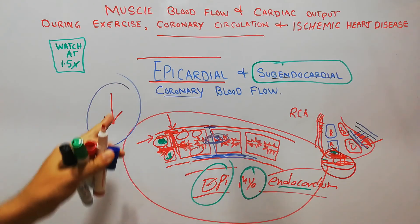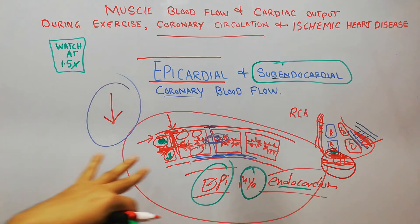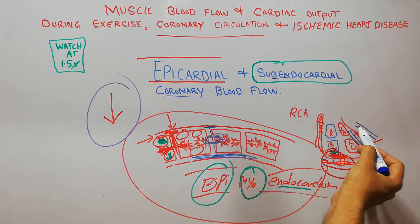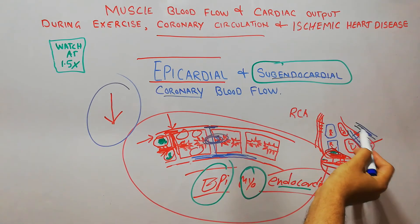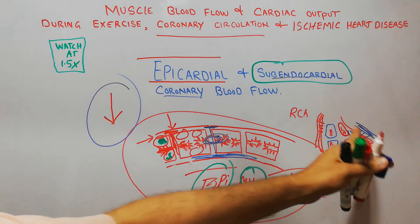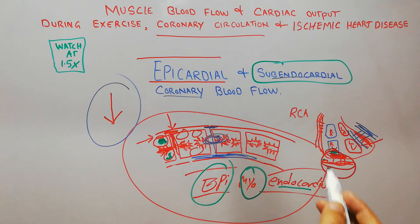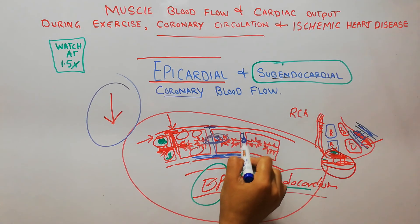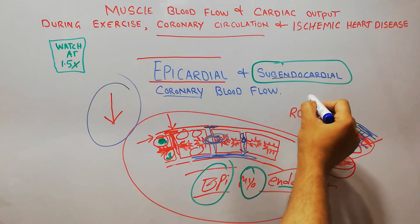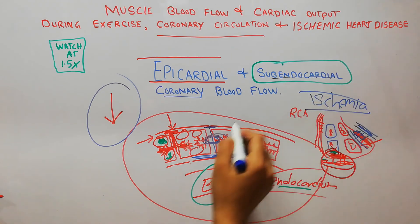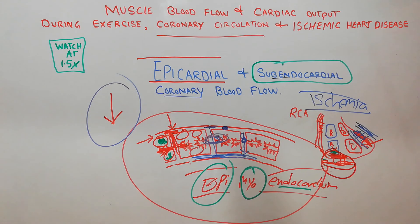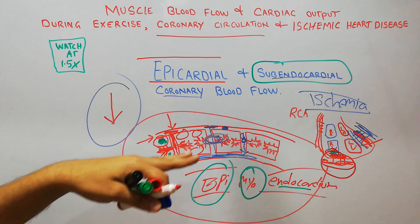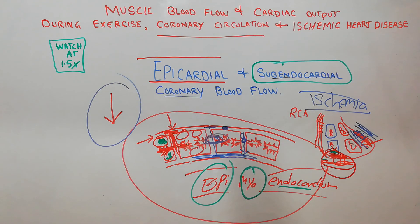This decreased blood flow is important in ischemia, which we will discuss in detail. To summarize: the outer vessels are the epicardial coronary blood vessels; they give intramuscular branches that take blood to the subendocardial coronary blood vessels. The intramuscular branches, especially in the left ventricle, may be compressed, decreasing blood to the subendocardial portion and causing ischemia. The chances of decreased blood flow or ischemia to the subendocardial coronary blood vessels are greater than to the epicardial coronary blood vessels.